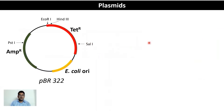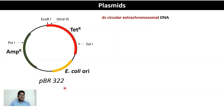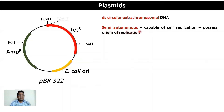The basic properties of plasmids: first, these are double-stranded circular extrachromosomal DNA — as seen in the structure of pBR322, the simplest known plasmid. They are semi-autonomous and can replicate independently of the host DNA, which is an important property for amplification of our DNA.